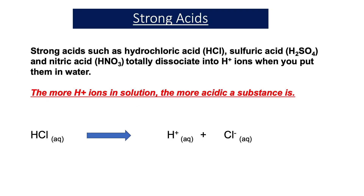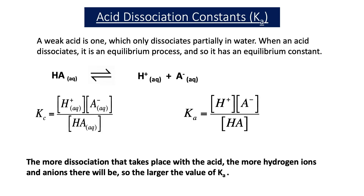In our previous videos on acids, we've learned that strong acids such as hydrochloric acid, sulfuric acid, and nitric acid totally dissociate into H⁺ ions when you put them in water. The more H⁺ ions in solution, the more acidic a substance is. The pH is equal to minus log of the H⁺ concentration, so the more H⁺ ions present, the lower the pH. A weak acid is one which partially dissociates in water, and when an acid dissociates, it's an equilibrium process and therefore has an equilibrium constant.